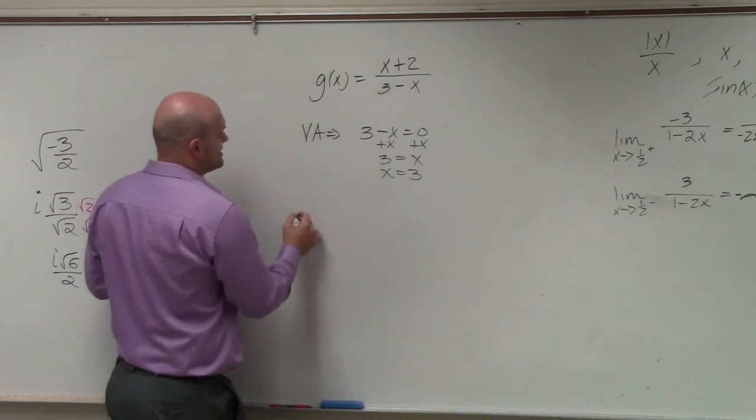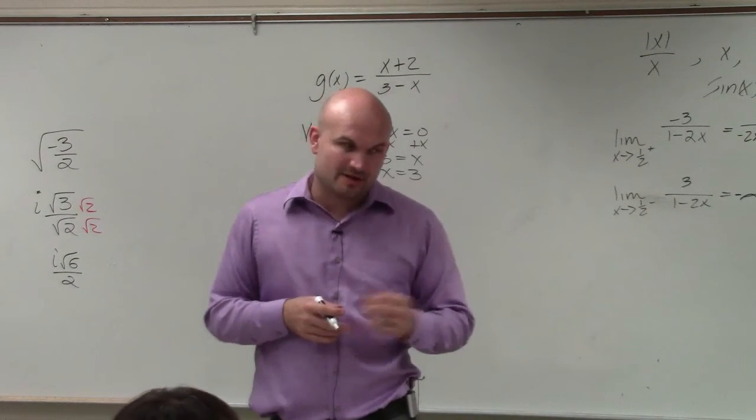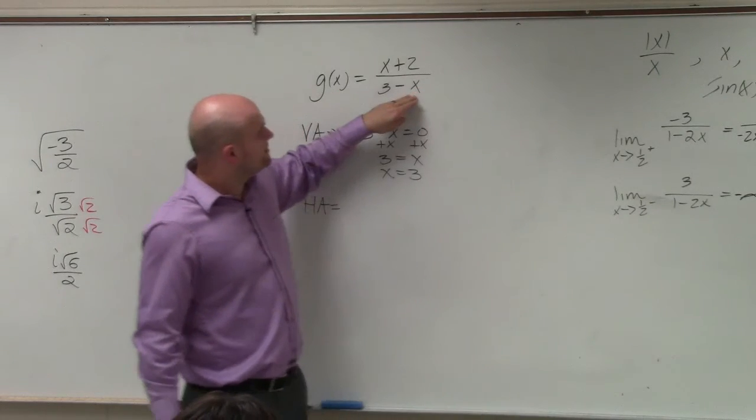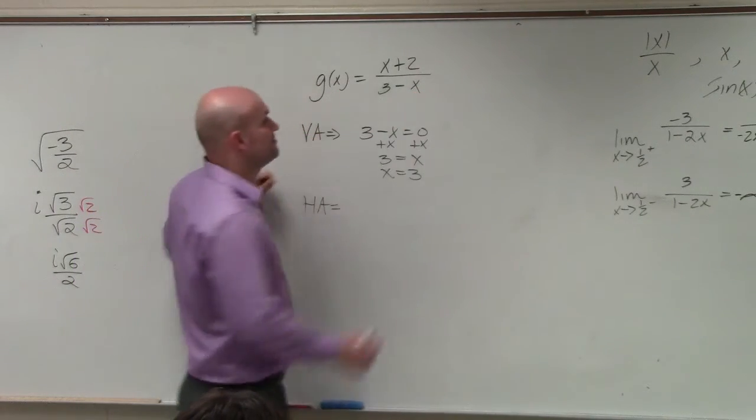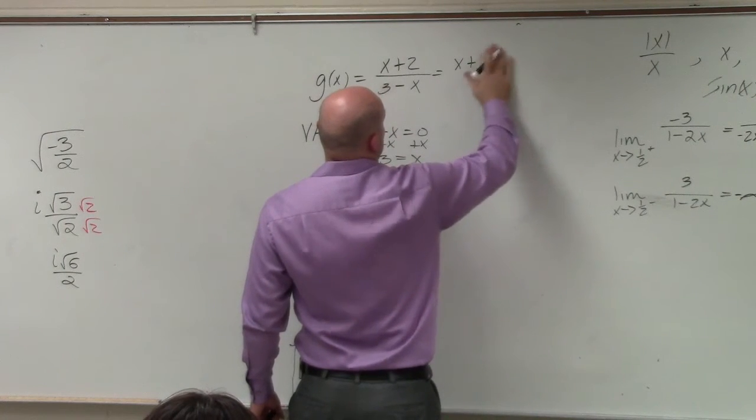To identify the horizontal asymptote, we need to look at the degrees of the numerator and the denominator. Now what we notice is the denominator is not in descending form. So what I'm going to do is I'm going to rewrite this in descending form.